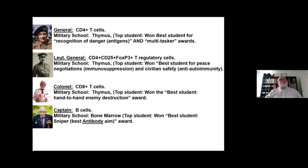There are also the captains — these are what I call the B cells. They went to a different school than the T cells: T cells go to the thymus, whereas B cells develop in the bone marrow. This fellow won an award for best student sniper. These are the cells that will eventually make all of our antibodies, so they are quite good snipers at producing antibody molecules that can specifically bind to different antigens on cells like platelets.